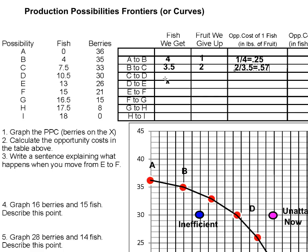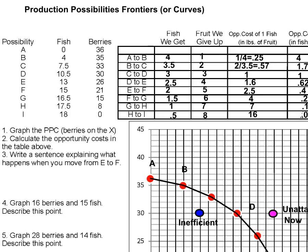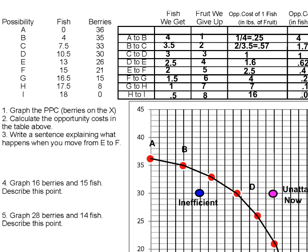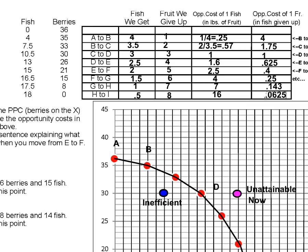You can pause the video and fill in the rest of the table yourself. Here are the numbers you should get — including going in the reverse direction. For example, between F and G, for each fish you get, you are giving up four berries. I'm going to make a second part to this video where I'll explain more details about this figure and what you should learn.